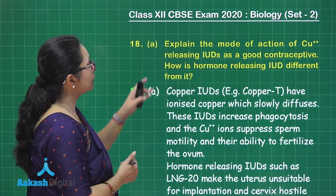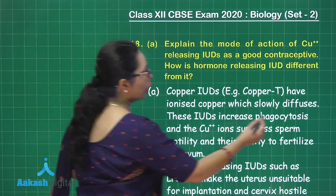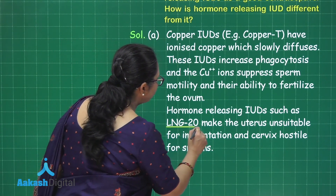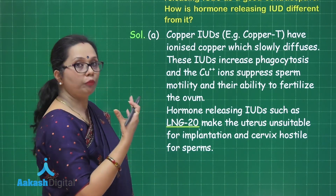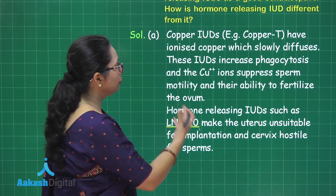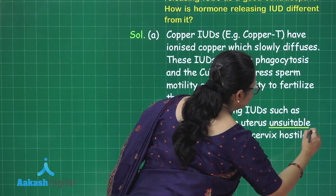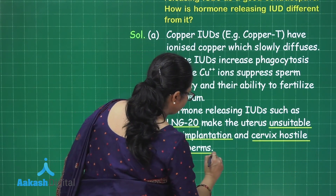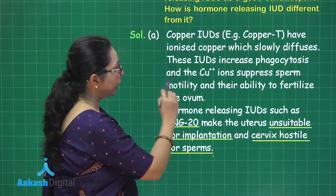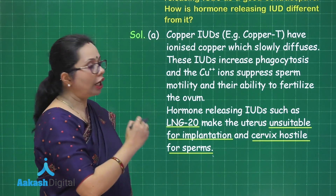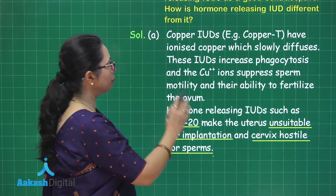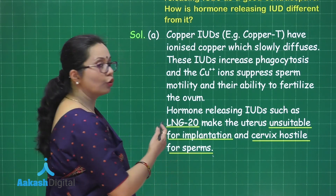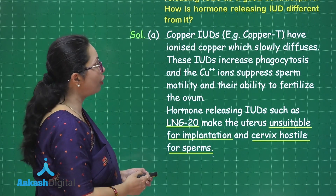The second part asks how hormone releasing IUDs are different. Hormone releasing IUDs, for example LNG20, release a synthetic form of progesterone-like hormone called Levonorgestrel. This makes the uterus unsuitable for implantation and also makes the cervix hostile for sperms. So copper releasing IUDs primarily suppress sperm motility, while hormone releasing IUDs have the enhanced effect of making the cervix hostile for sperms and the uterus unsuitable for implantation.